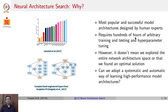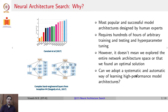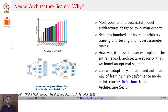Often, researchers use architectures that were proposed earlier and adapt a few elements to arrive at an architecture for a given problem. That brings the question: can we adopt a systematic and automatic way of learning high-performance model architectures? The solution we are going to talk about is Neural Architecture Search.